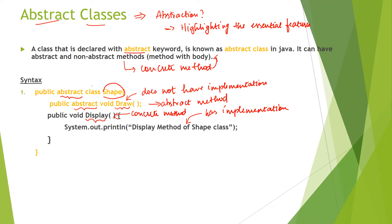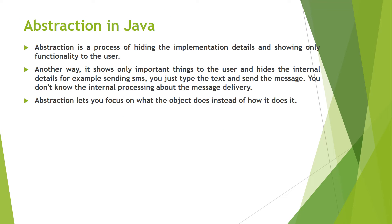So the Shape class has two methods: draw() and display(). The draw() method is declared as an abstract method since it has no implementation, and the display() method is called a concrete method since it has implementation. An abstract class is a class which has both abstract and non-abstract methods — as seen in the Shape class.